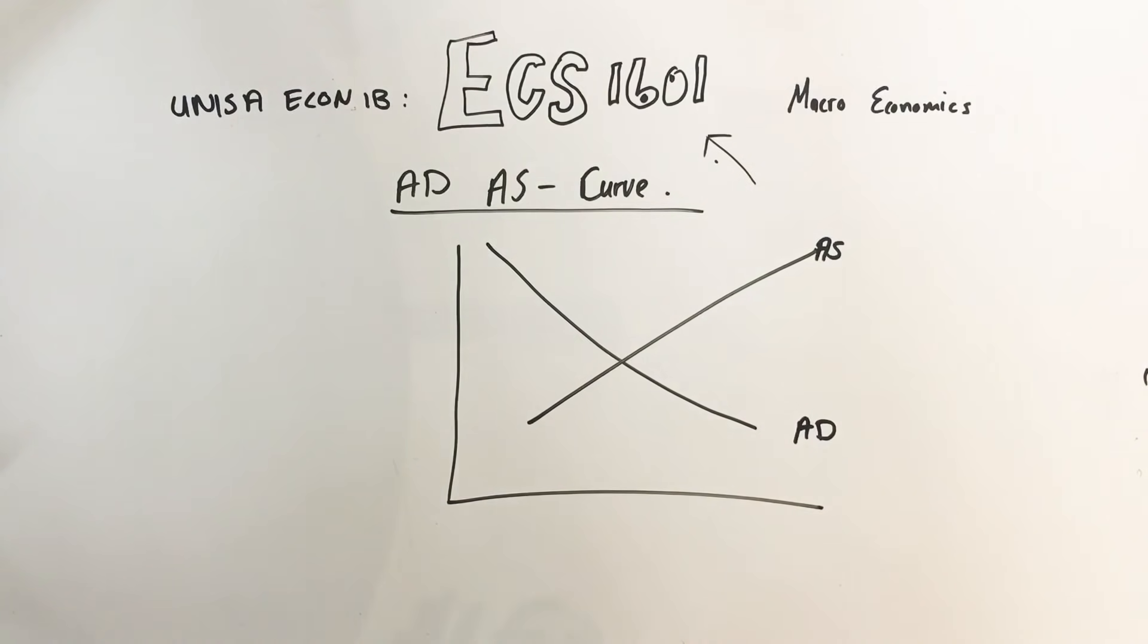Over here we have Y, which is also the GDP, or total output, aggregate output, total income, any word like that. And over here we have P, which will be the price level. So Y zero and P zero.